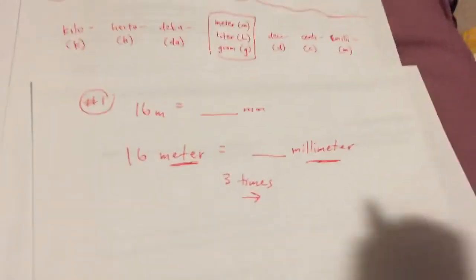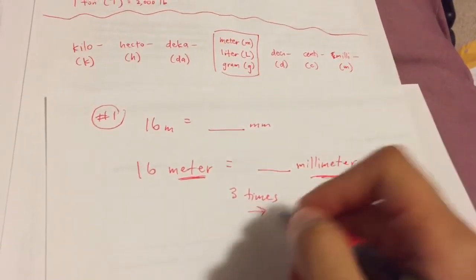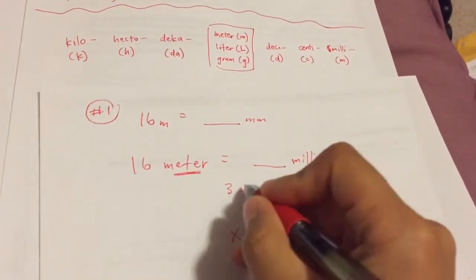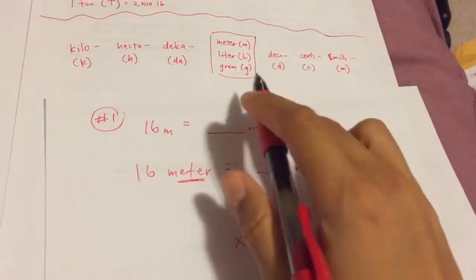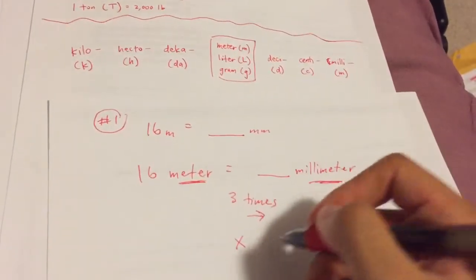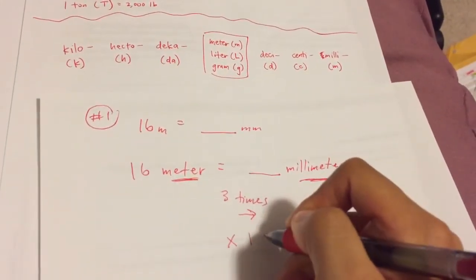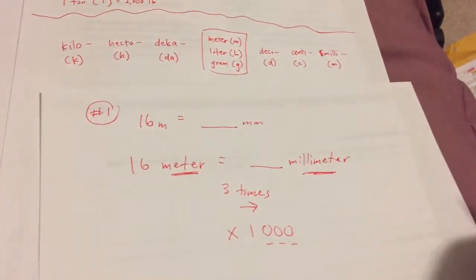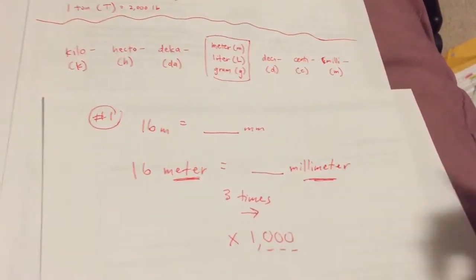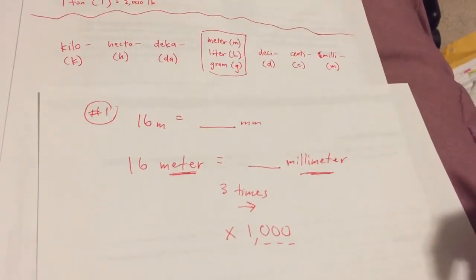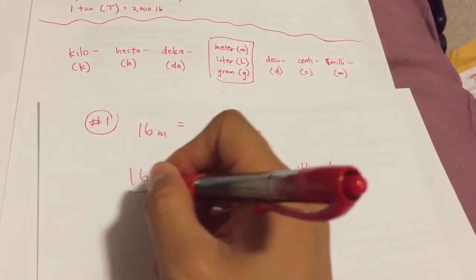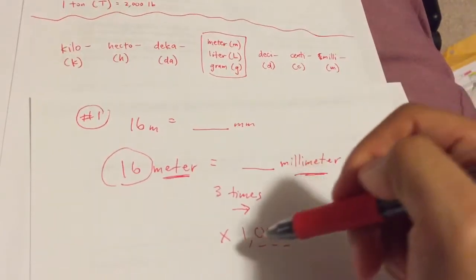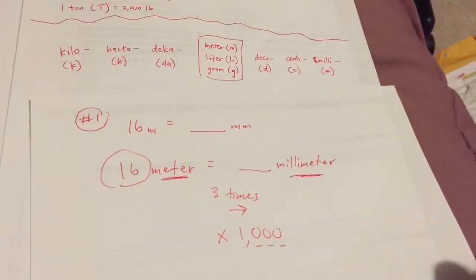Now, what that means is that when we go right, we're going to multiply, and we're shifting the place value three times. When you're shifting the place value three times, you're multiplying by a power that has three zeros, which is 1,000. Our equation is going to be the number that we start with times 1,000.